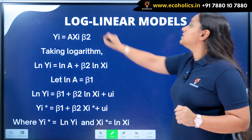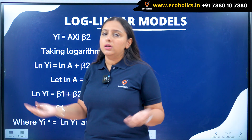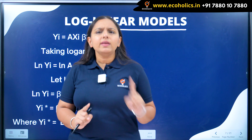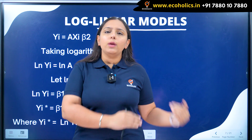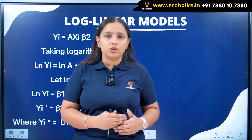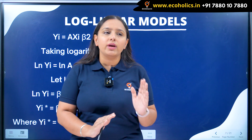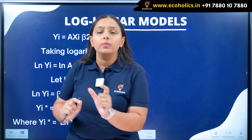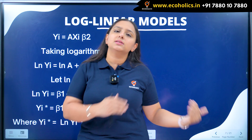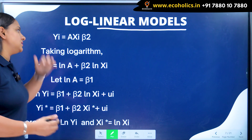So the name of this functional form is the log-linear model. When I say log-linear model, it means there is going to be log and there is going to be linearity. One thing I want to tell you is there are two types of models where we have the same wording — log and linear — so you don't have to get confused. I will help you understand that this word when used in one form represents one kind of model, and in another form it represents another model.